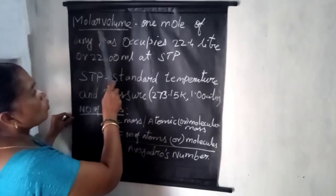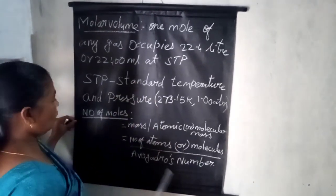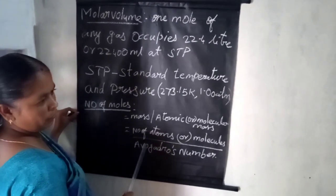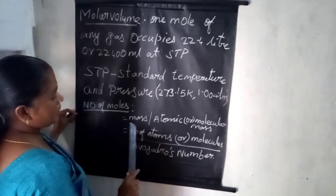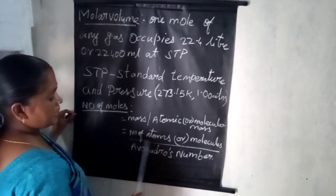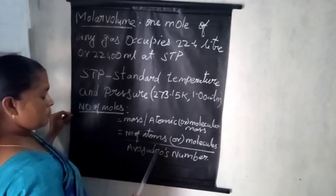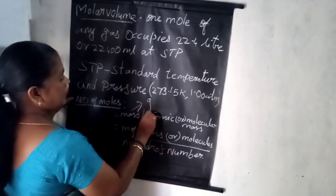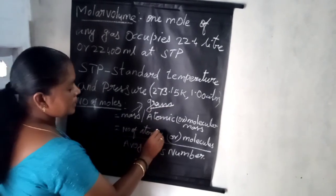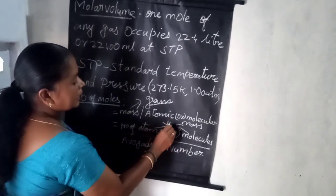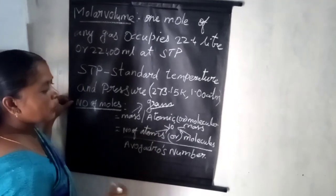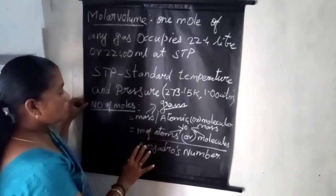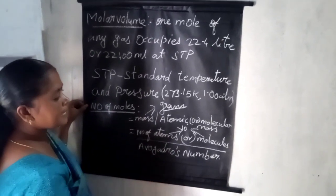Next, we calculate the number of moles. There are two types of formulas: one when mass is given, and another when atoms or molecules are given. When mass is given in grams, one formula applies. When atoms or particles are given as a value × 10 to some power, another formula applies. Here is one example to show how you calculate the number of moles.